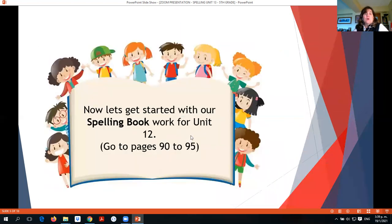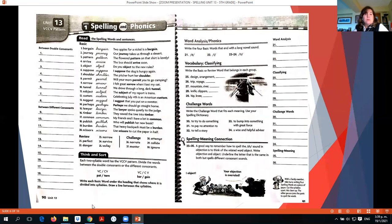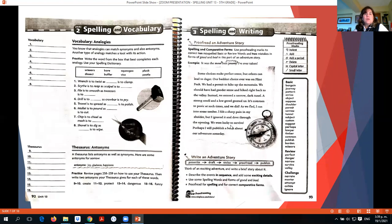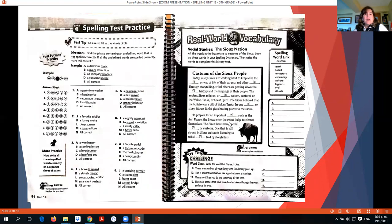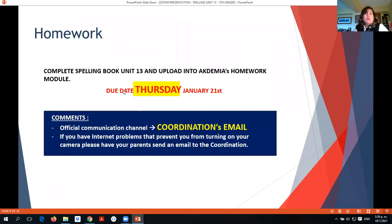So you will work on the six pages of your spelling book. Pages are 90, 91, 92, 93, 94, and 95. And you will upload them into academia. You have till Thursday, January 21st. And, well guys, this is all for today. And thank you very much for watching.